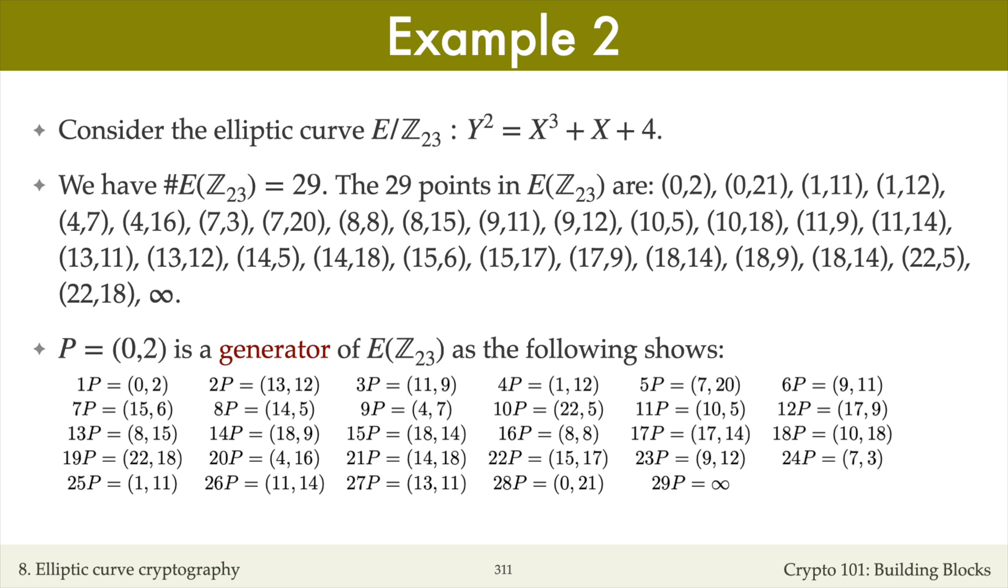Here I've listed all the multiples of P: 1P, 2P, 3P, and so on, up to 29P, which is the point at infinity. You can see that these multiples of P comprise all the points on the elliptic curve.